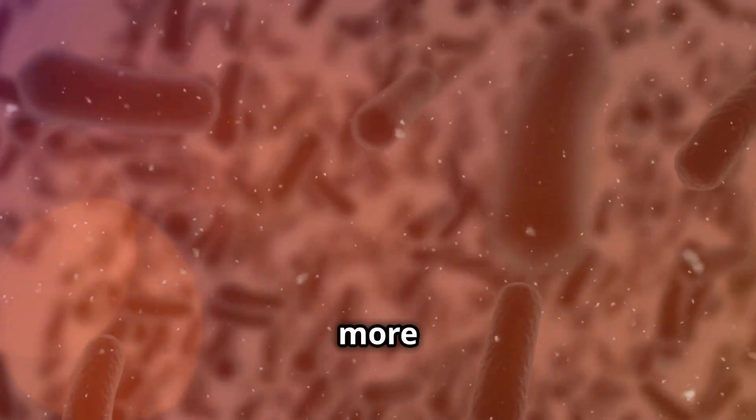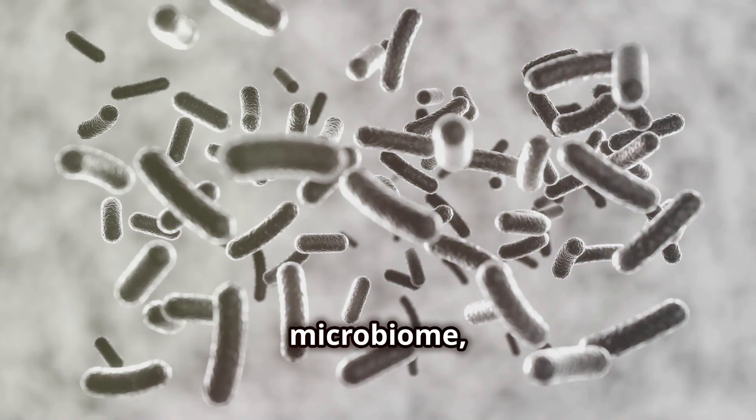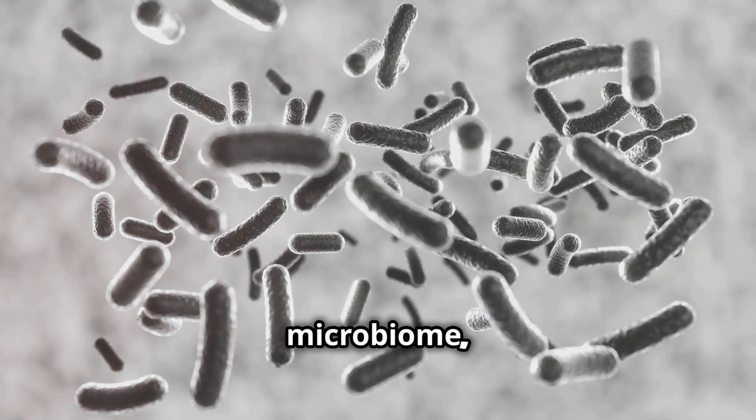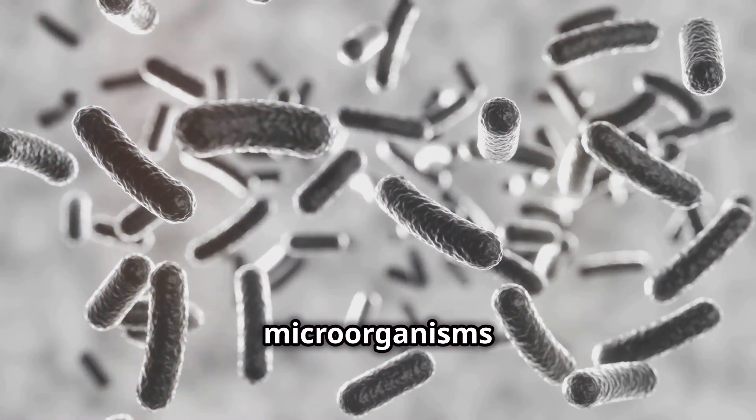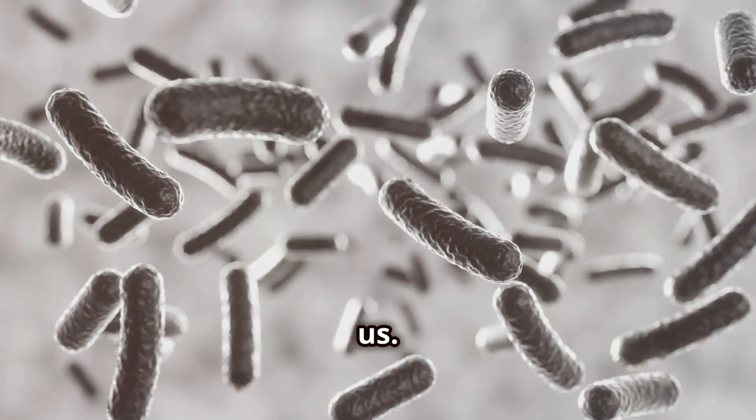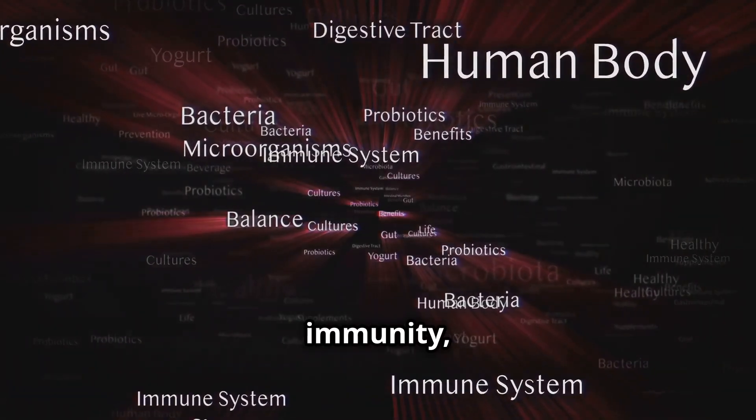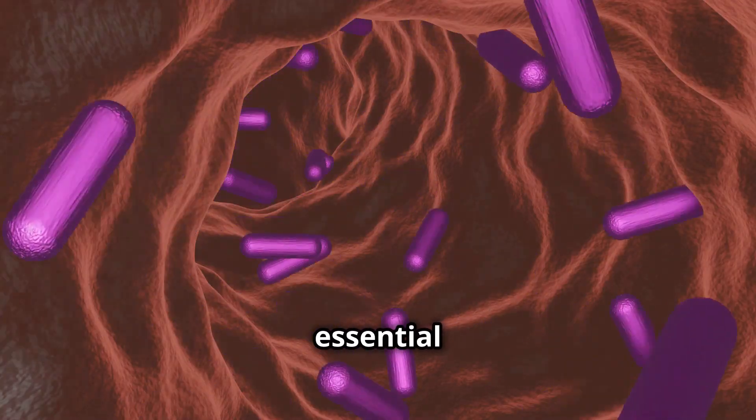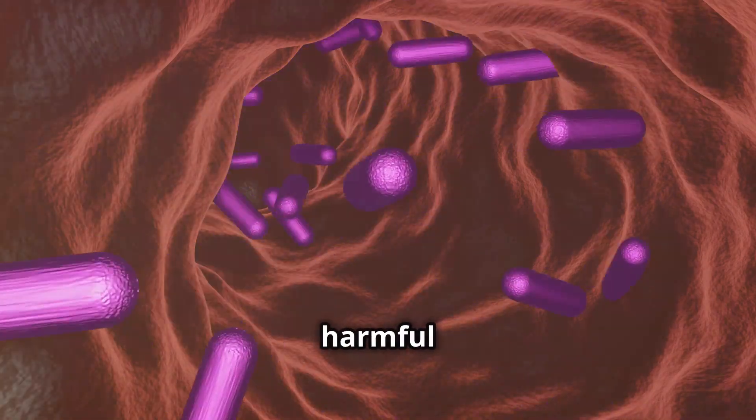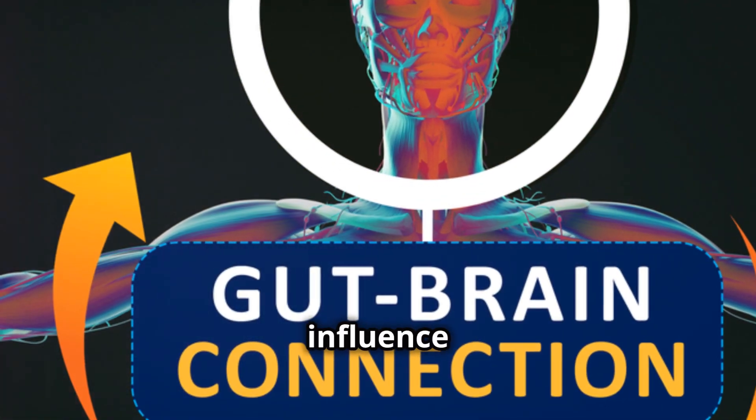Did you know that there are more bacterial cells in your body than human cells? The human microbiome, particularly the gut microbiome, is a complex ecosystem of trillions of microorganisms that live on and inside us. These bacteria play crucial roles in digestion, immunity, and even mood regulation. They help break down food, produce essential vitamins, and protect against harmful pathogens.